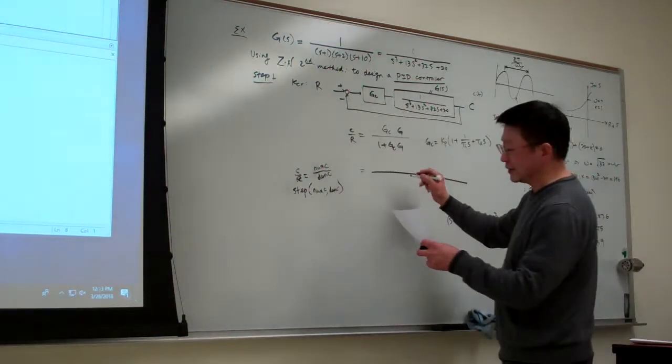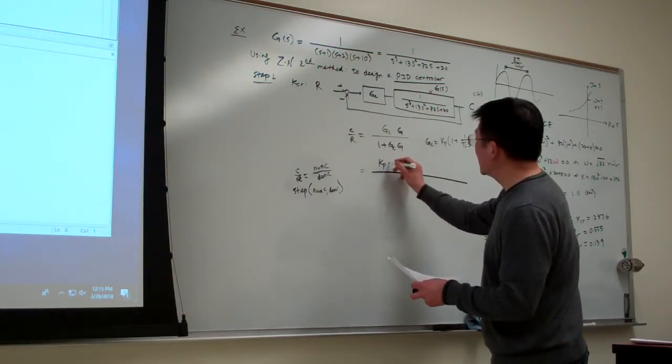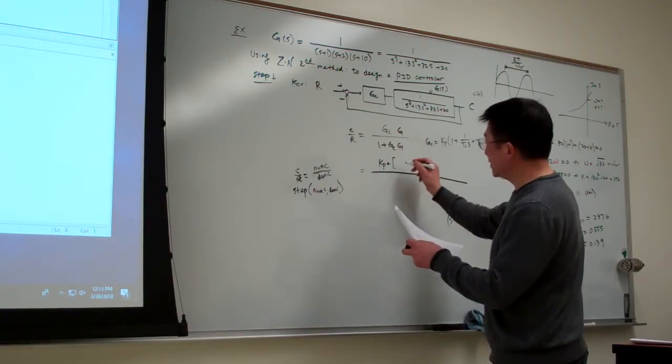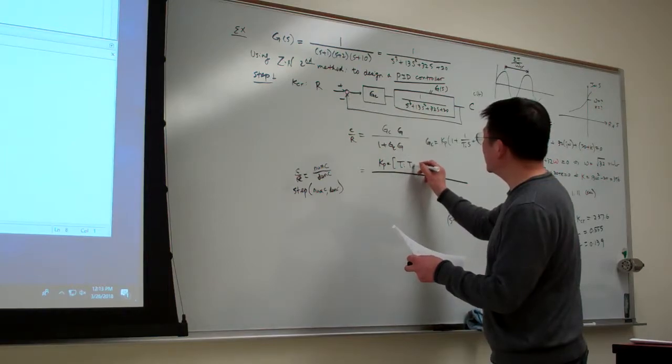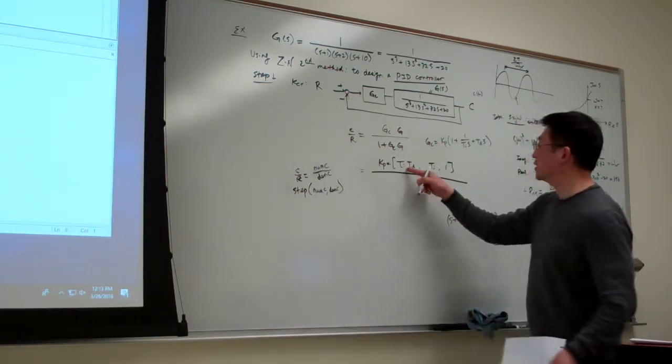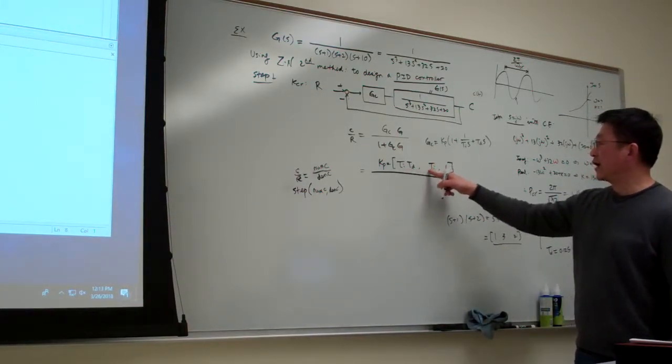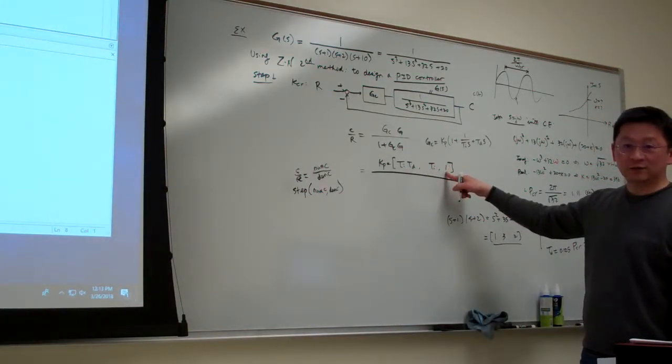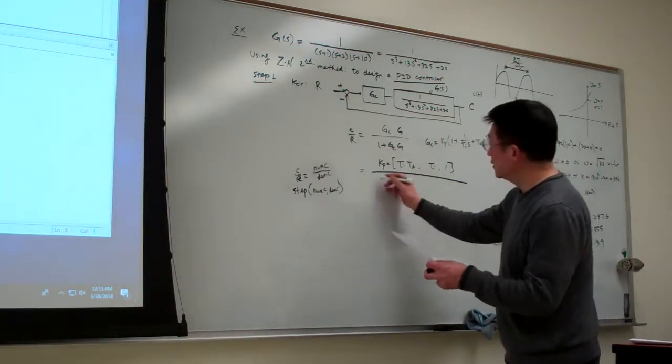I simply write up my form, it's one, three, and two, because this one can save my time in writing. So here is my result here, so that is KP multiplied with TI times TD, and TI, and one. Basically it's in descending order, S squared, S term, and constant term.